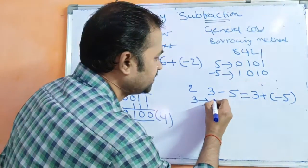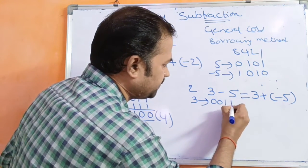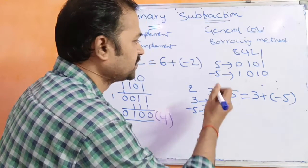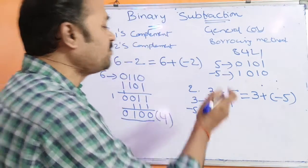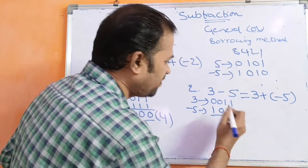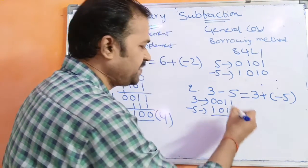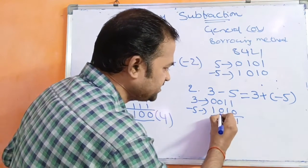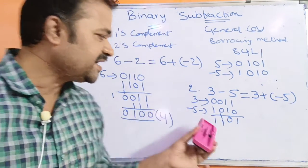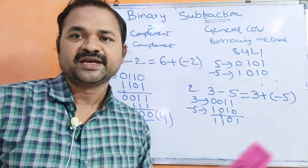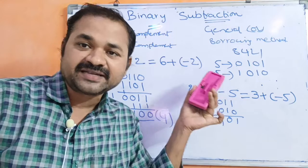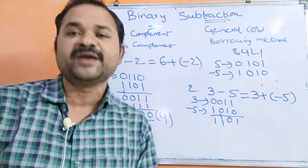What is 3 in binary notation? 0, 0, 1, 1. What is minus 5 in one's complement notation? 1, 0, 1, 0. Now simply perform the addition operation. 1 plus 0 is 1. 1 plus 1 is 0 with carry 1. 0 plus 0 plus 1 is 1. 0 plus 1 is 1. Here we did not get any carry. If we don't get any carry, then this is the result, but the result is in one's complement form.